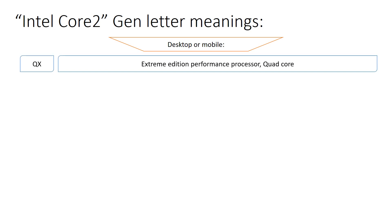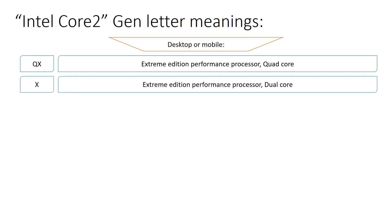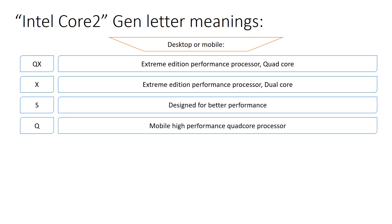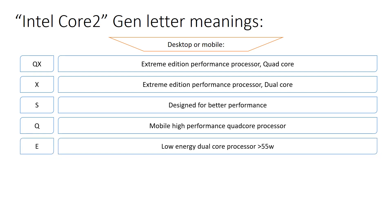For Intel Core 2, desktop and mobile are mixed together. QX stands for extreme edition quad core processor. X stands for extreme edition dual core performance processor. S is designed for better performance. Q is a mobile high performance quad core processor. E stands for low energy dual core processor with a TDP below 55 watts.